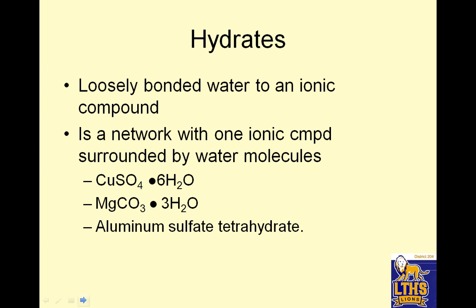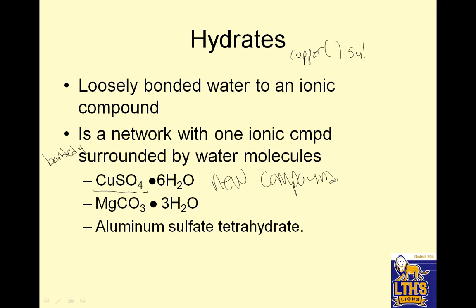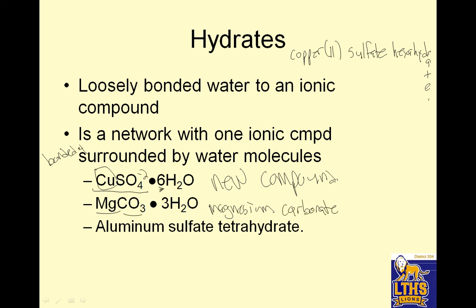Hydrates are loosely bonded water to an ionic compound. It is a network with one ionic compound bonded and surrounded by water molecules — so it's a new compound, not a mixture, with new properties. To name it: CuSO₄ — Cu is copper, copper is Roman, and SO₄ is sulfate, which is SO₄ minus 2. So one copper has to balance a minus 2, so it's copper 2 sulfate. With six waters, the prefix for six is hexa, so it's copper 2 sulfate hexahydrate. MgCO₃ — magnesium is Mg, CO₃ is carbonate. It's not Roman, that's why I didn't have to worry about the charge. Three waters means trihydrate.